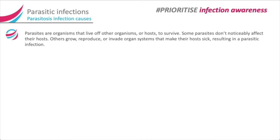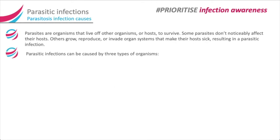Parasites are organisms that live off other organisms or hosts to survive. Some parasites don't noticeably affect their hosts. Others grow, reproduce or invade organ systems that make their hosts sick, resulting in a parasitic infection. Parasitic infections can be caused by three types of organisms.